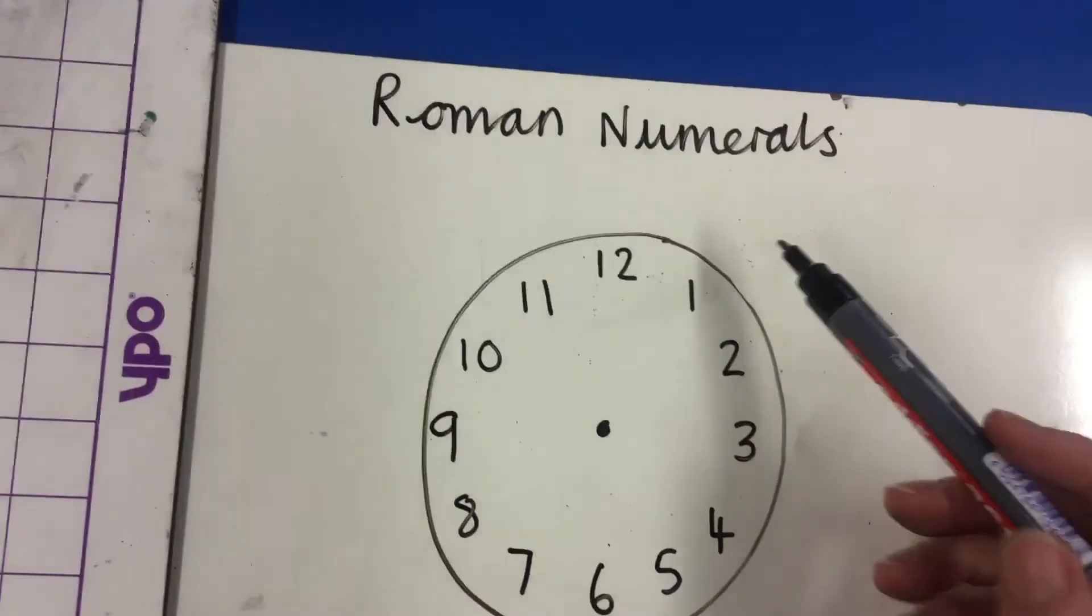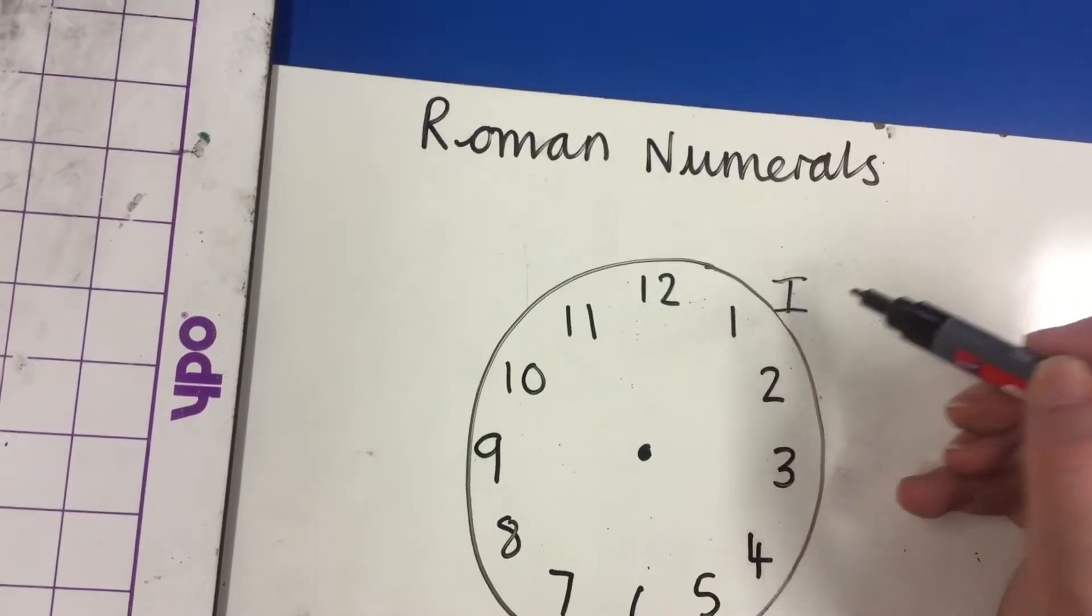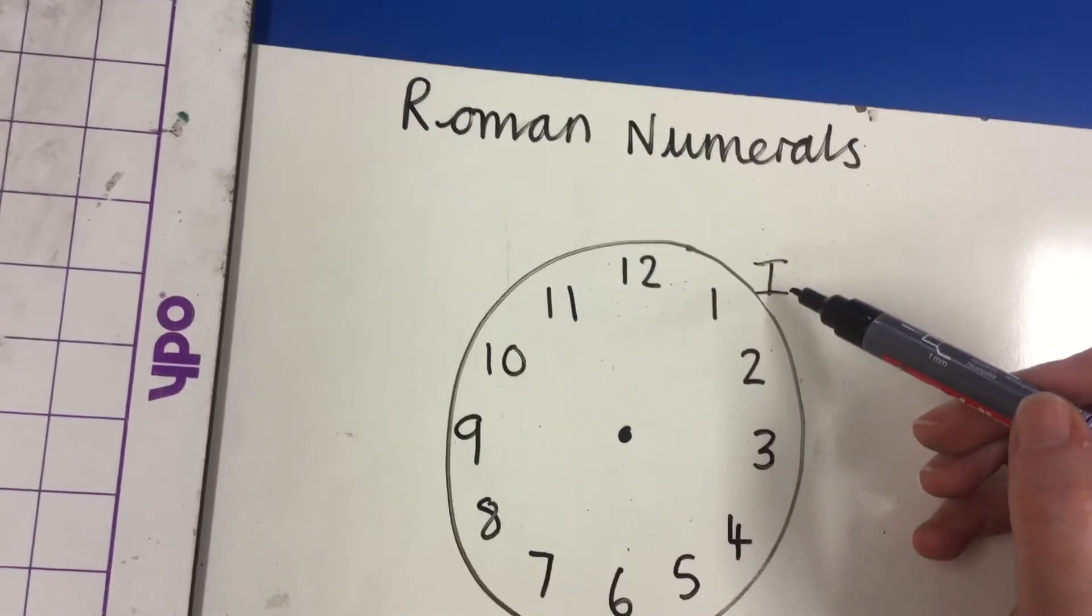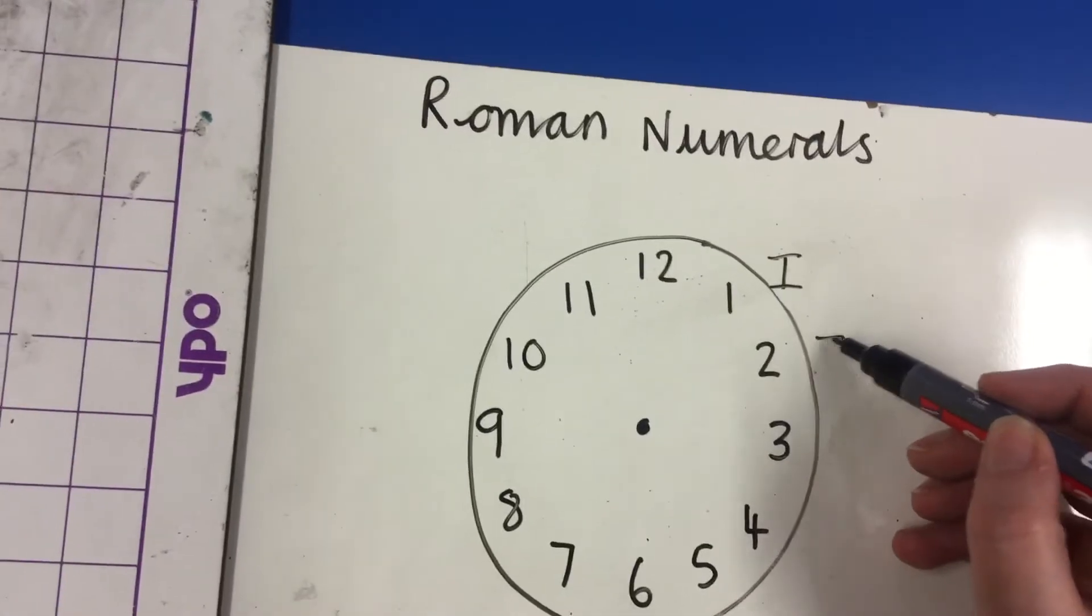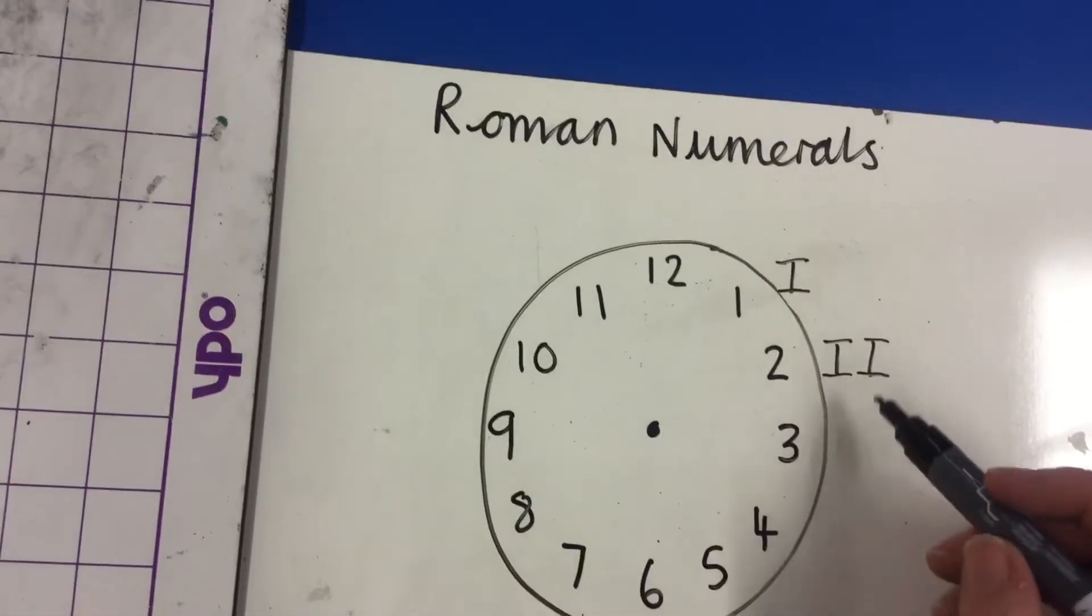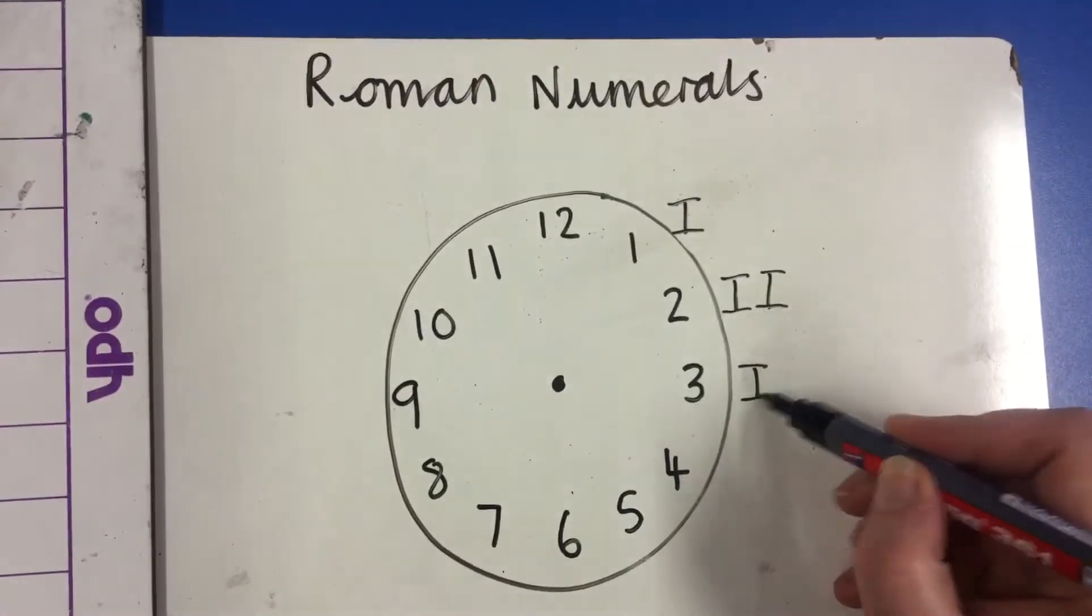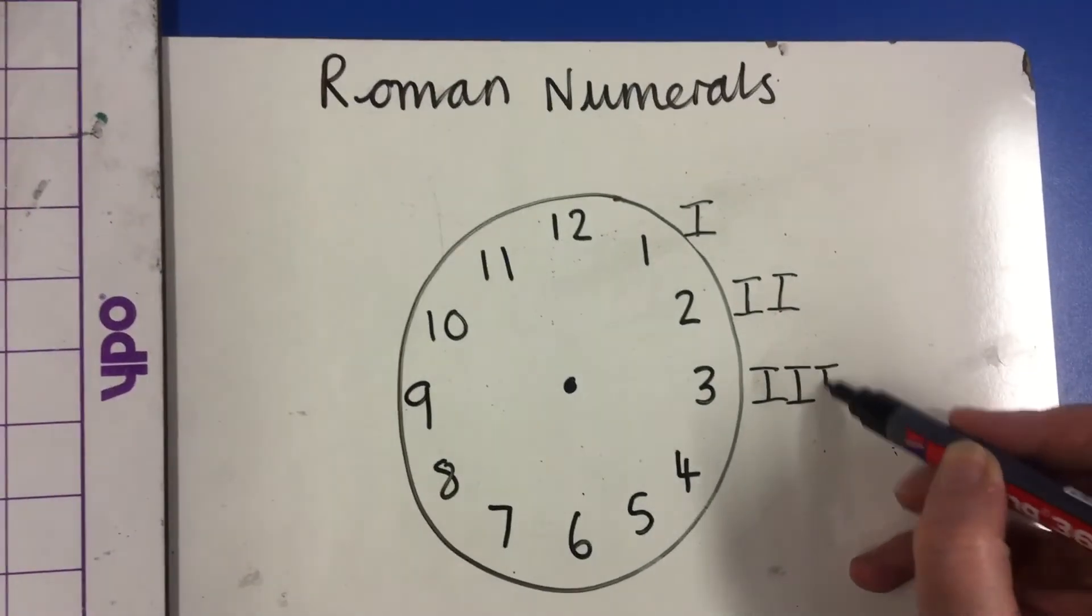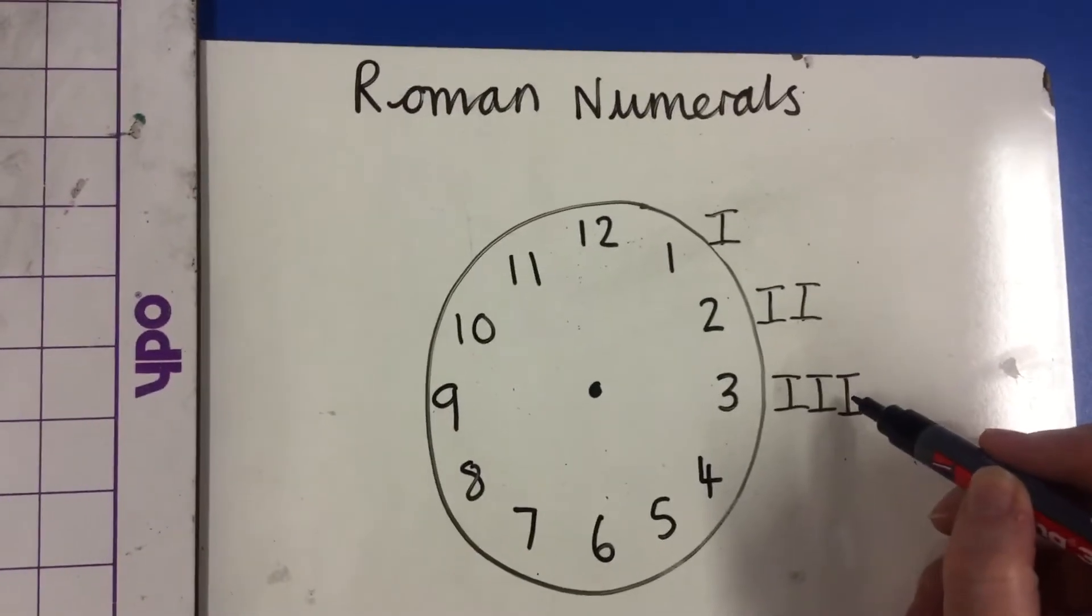The number 1 is represented in Roman numerals by the letter I. This represents 1. The number 2 uses two of these I's together. The number 3 follows the same pattern, but this time 1, 2, 3 of the I's, and this represents 3.